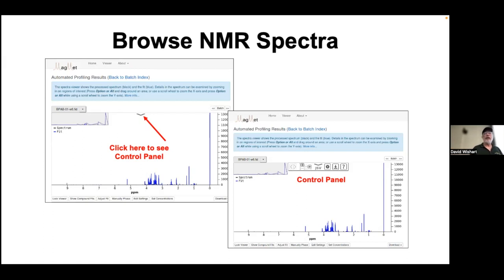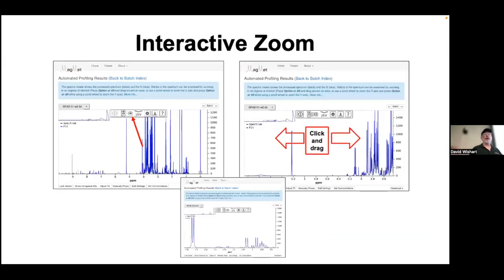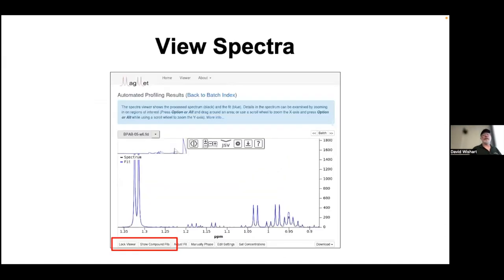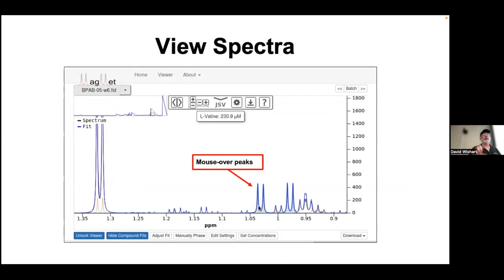You can expand and blow up your spectrum, zoom in, drag across it, and see how things are fitting. This interactive zoom is available for all spectral views. You can show your compound file, adjust your fit, lock your view. Once it's done, spend a few minutes exploring — mouse over and click on peaks to identify things. You can search by name; typing in valine, for example, will highlight the valine chemical shifts in the spectrum above.